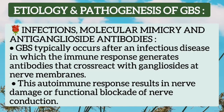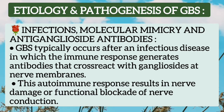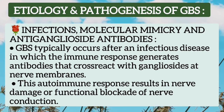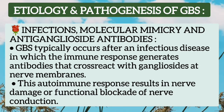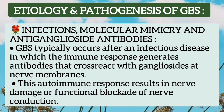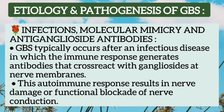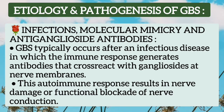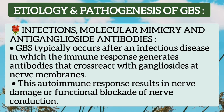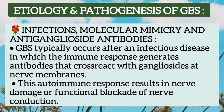Now I will discuss its etiology and pathogenesis. In Guillain-Barré Syndrome, humoral and cell-mediated immune responses occur. In these infections, molecular mimicry and anti-ganglioside antibodies play an important role. It typically occurs after an infectious disease in which the immune response generates antibodies that cross-react with the gangliosides at the nerve membranes. This autoimmune response results in nerve damage or functional blockade of nerve conduction.